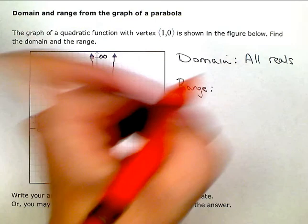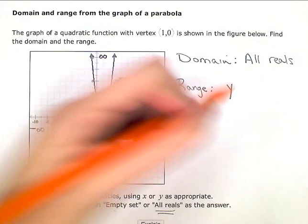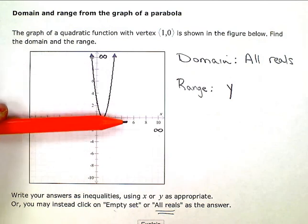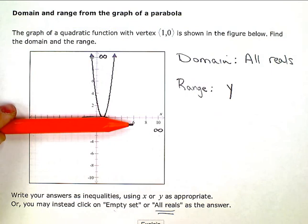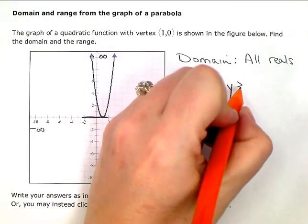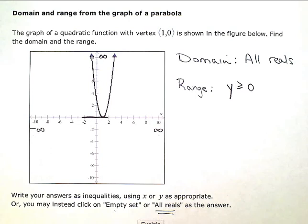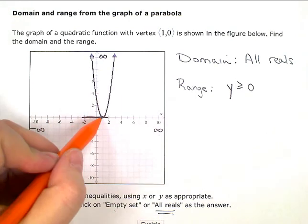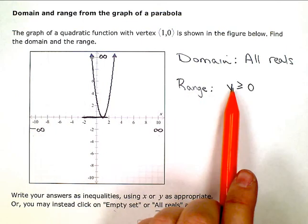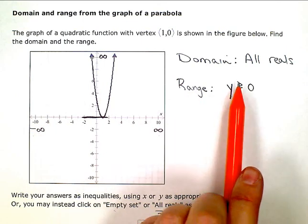and we have to use y here because we're talking about the y values, the y's will always be bigger or greater than or higher than on the graph 0. And I put equal to because there is actually a value at 0 right there. So my range will be the y values of this function will always be greater than or equal to 0.